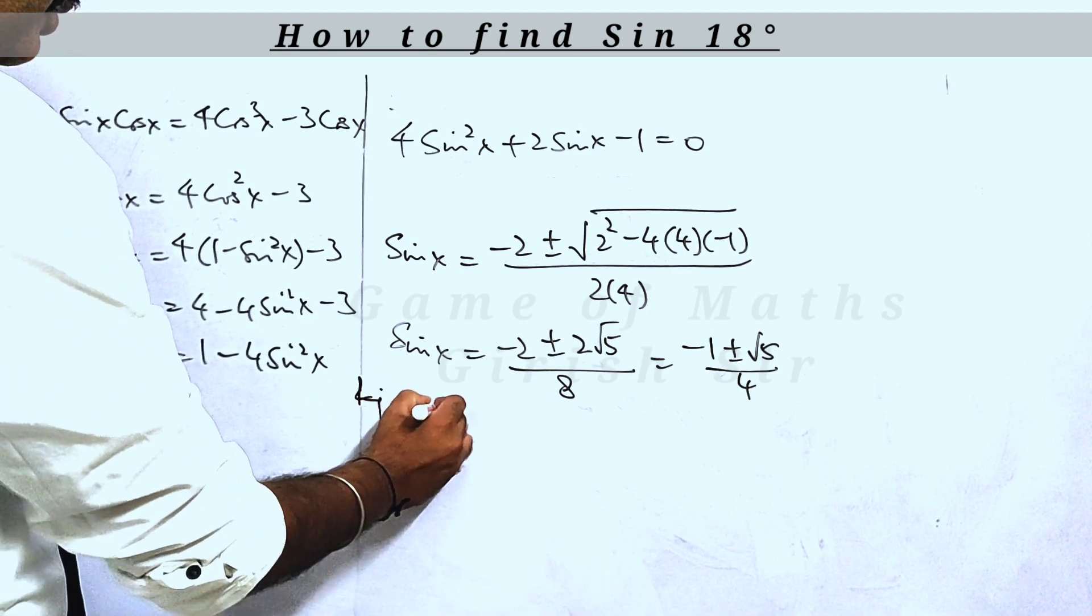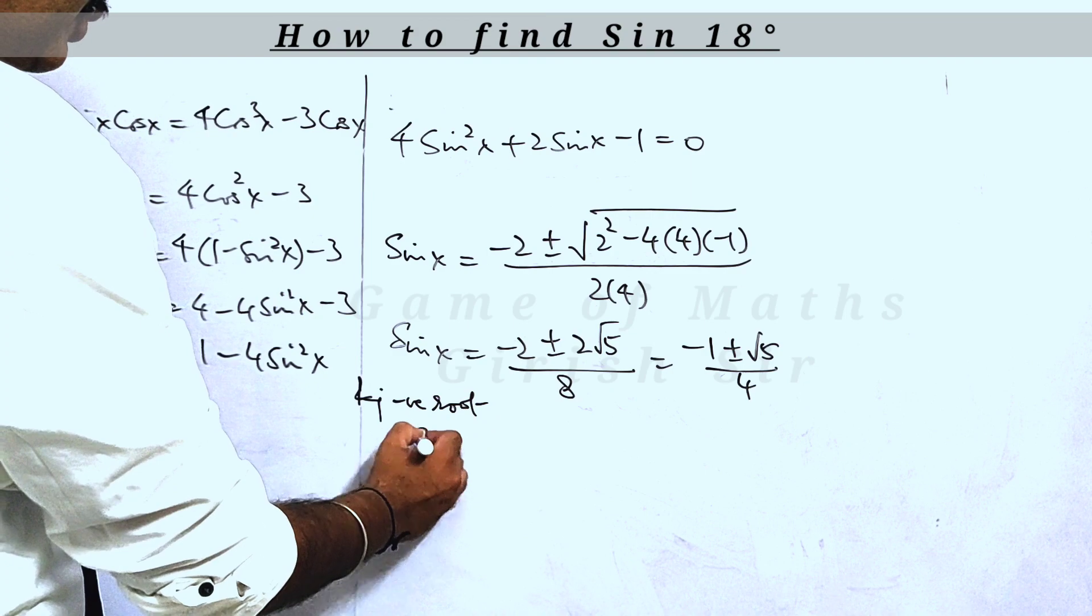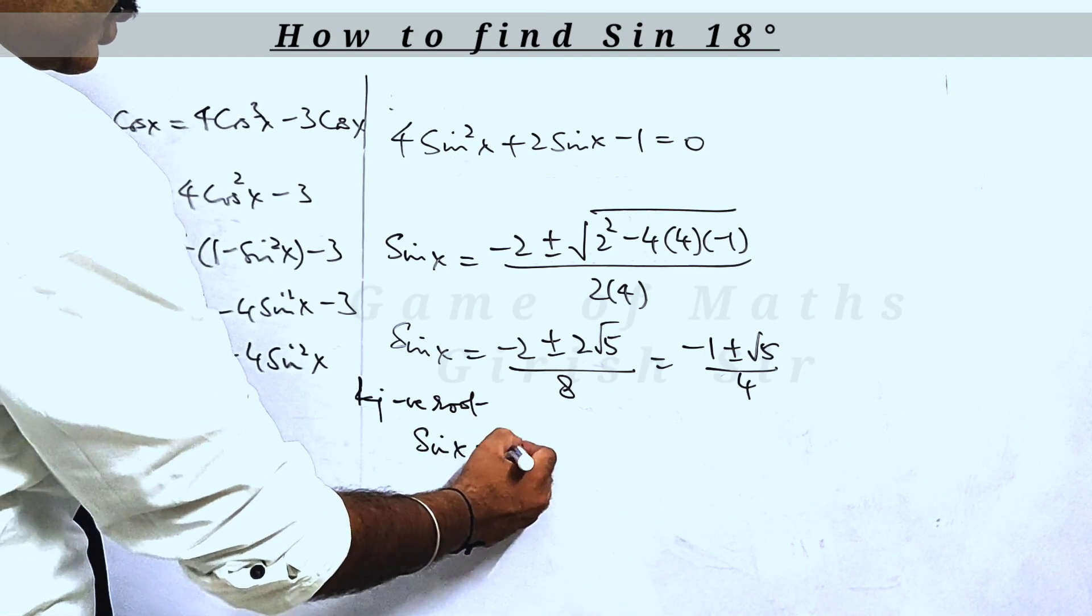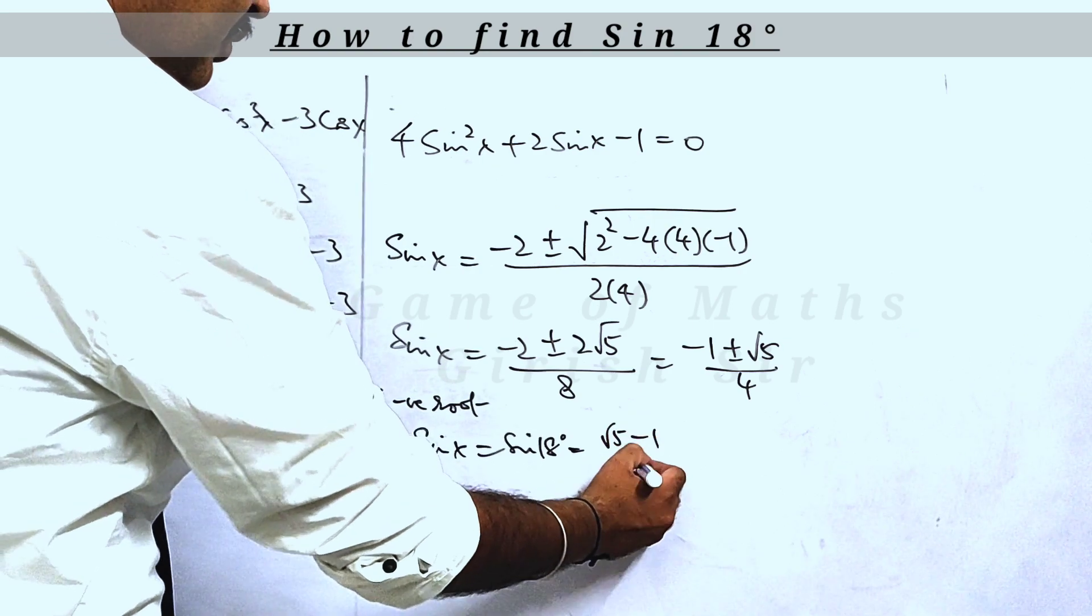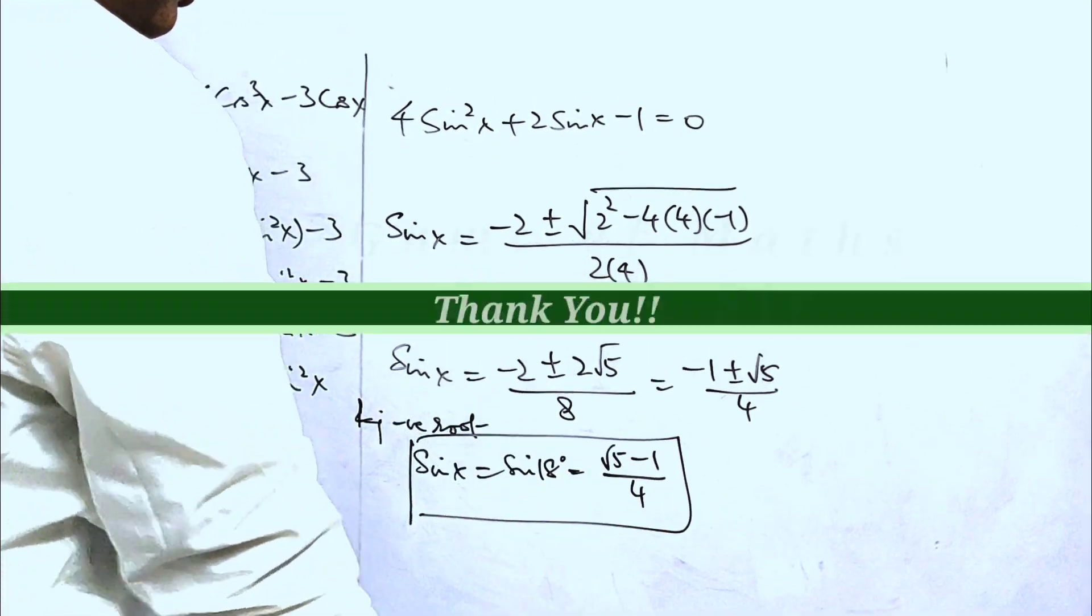So if we reject the negative root, we will be getting sin x, which is sin 18 degrees, as root 5 minus 1 by 4. This is the answer. Thank you.